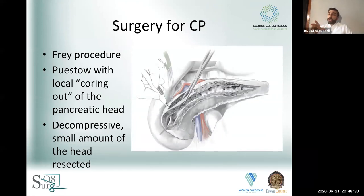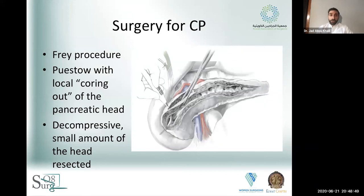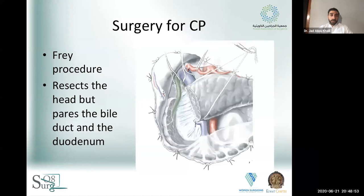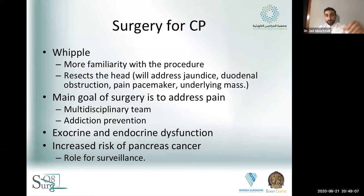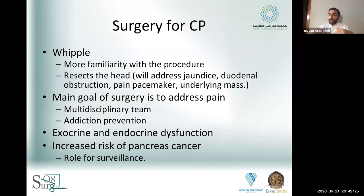A Frey procedure is a variation that also decompresses the pancreatic duct but additionally cores out the head of the pancreas — you're decompressing the duct and removing a small amount of pancreatic head tissue while leaving the head behind, and usually not touching the bile duct, though sometimes you can. The Whipple procedure is a good treatment for many patients because HPB surgeons are familiar with it and it is both a decompressive and resectional procedure — removing the head, bile duct, and duodenum. So if there's a pain pacemaker or a suspicious mass there, it's removed. It also provides a pancreaticojejunostomy to drain the pancreatic duct, and is a good option when the distal duct is not dilated.